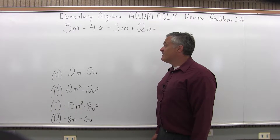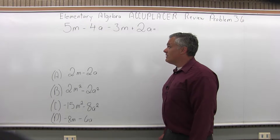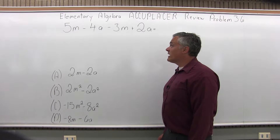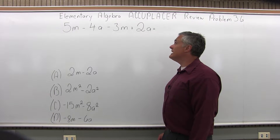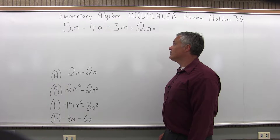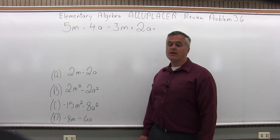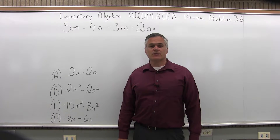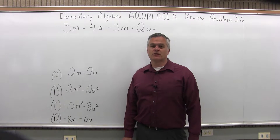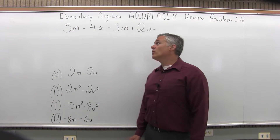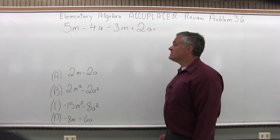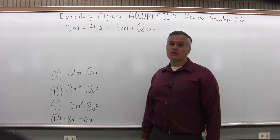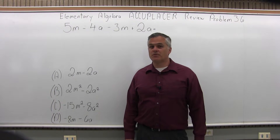We have 5m minus 4a minus 3m plus 2a, and we want to see what that simplifies to. When we're adding and subtracting different values, the m's can go together, the a's can go together, but they cannot be mixed.